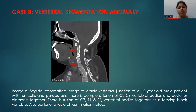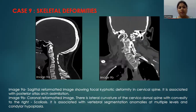This case had vertebral segmentation anomalies. It is a case of a 12-year-old male who presented with torticollis and paraparesis. In this image, there is complete fusion of C2 to C6 vertebral body and C7, T1, and T2 vertebral body forming block vertebra. Image 9A shows focal kyphotic deformity in the cervical spine, and image 9B shows a lateral curvature of the cervical dorsal spine with convexity to the right, suggestive of scoliosis.